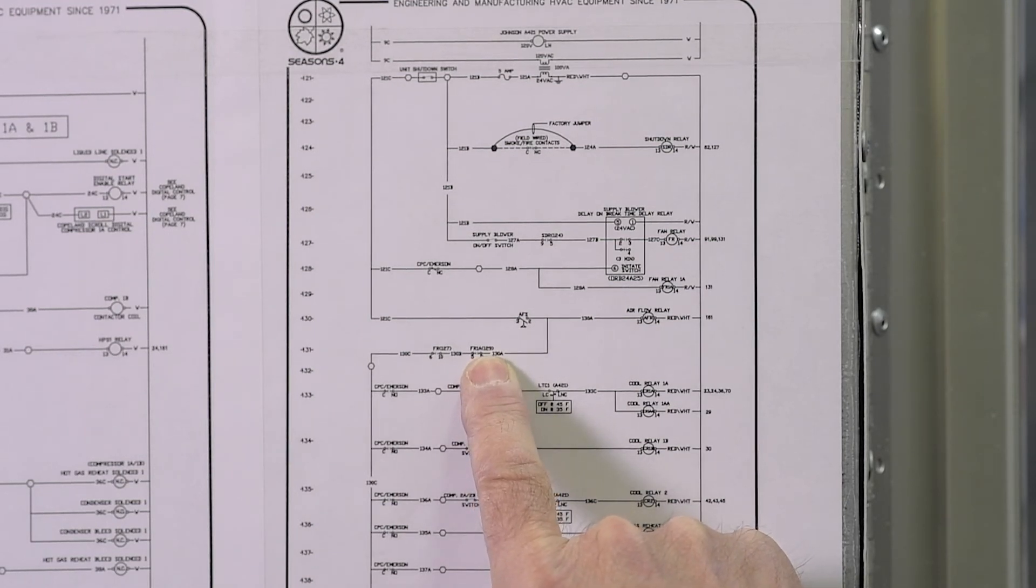The number in parentheses after FR1A, 128, indicates where the coil is for that set of contacts. If I go back over to the line numbers and up to 128, I'll slide over and I can find the coil for that set of contacts.